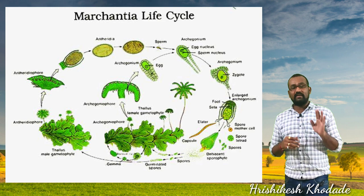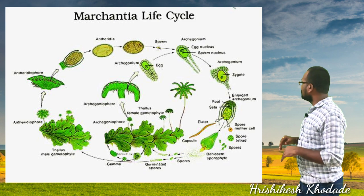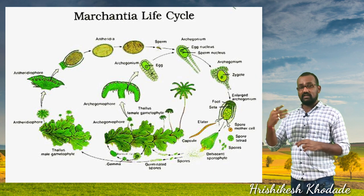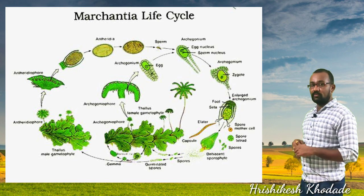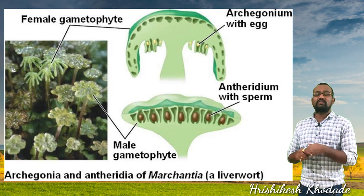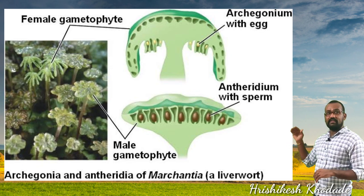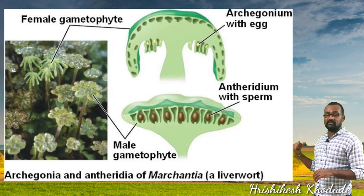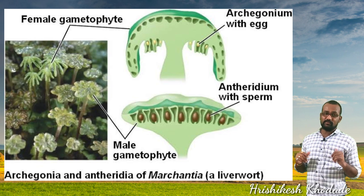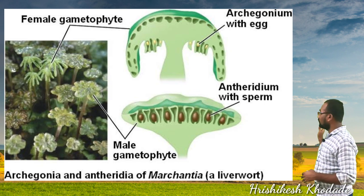The male gametes find the female gametes and unite, resulting in the formation of a zygote, which then forms an embryo and sporophyte respectively. The male reproductive organ is known as the anthridium and the female reproductive organ is known as the archegonium. The anthridium produces male gametes and the archegonium produces female gametes. In the picture you can see that these male and female reproductive organs are different in appearance.